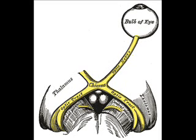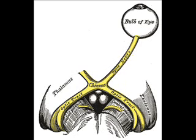Most of these fibers terminate in the lateral geniculate body. From the lateral geniculate body, fibers of the optic radiation pass to the visual cortex in the occipital lobe of the brain. More specifically, fibers carrying information from the contralateral superior visual field traverse Meyer's Loop to terminate in the lingual gyrus below the calcarine fissure in the occipital lobe, and fibers carrying information from the contralateral inferior visual field terminate more superiorly.